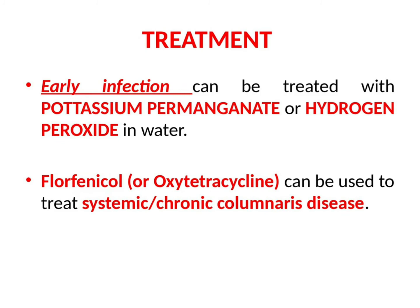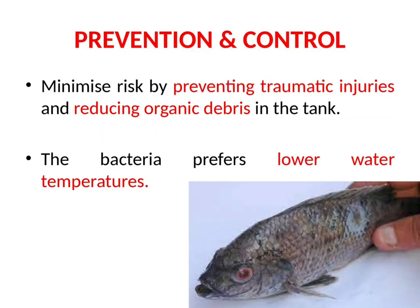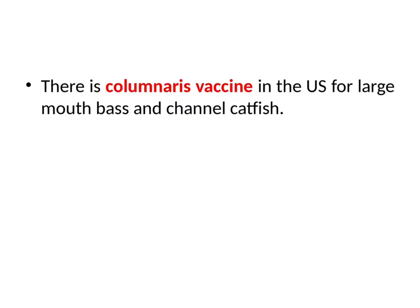For prevention and control, minimize risk by preventing traumatic injuries and reducing organic debris in the tank. The bacteria prefer lower water temperatures. Also, there is a columnaris vaccine available in the US for largemouth bass and channel catfish.